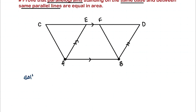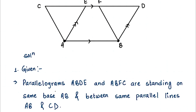The first thing we do when solving any mathematical theorem is write the given things from the question and from the figure. So in this figure we have parallelogram ABDE and parallelogram ABFC standing on the same base AB. Our given is: parallelograms ABDE and ABFC are standing on the same base AB and between the same parallel lines CD and AB.